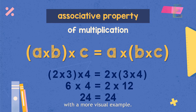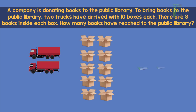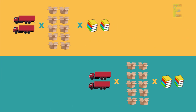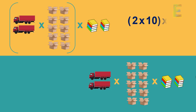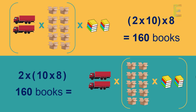Let's look at how this property works with a more visual example. A company is donating books to a public library. Two trucks arrived, each carrying 10 boxes, and there are 8 books inside each box. How many books reached the public library? We can multiply the number of trucks by the number of boxes and then by the number of books per box, or we can multiply boxes by books first and then by the number of trucks. Both approaches give a result of 160 books in total. That's the associative property of addition and multiplication.